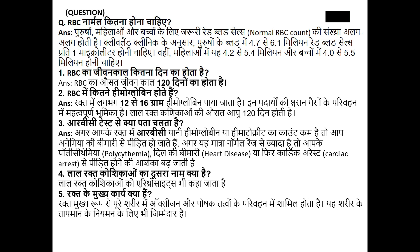RBC नॉर्मल कितना होना चाहिए — पुरुषों, महिलाओं और बच्चों के लिए जरूरी Red Blood Cells नॉर्मल RBC काउंट की संख्या अलग-अलग होती है। Cleveland Clinic के अनुसार पुरुषों के ब्लड में 4.7 से 6.1 मिलियन Red Blood Cells प्रति 1 माइक्रो लिटर होनी चाहिए। महिलाओं में यह 4.2 से 5.4 मिलियन और बच्चों में 4.0 से 5.5 मिलियन होनी चाहिए। एक RBC का जीवनकाल लगभग 120 दिनों का होता है।